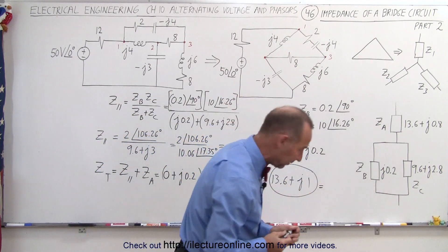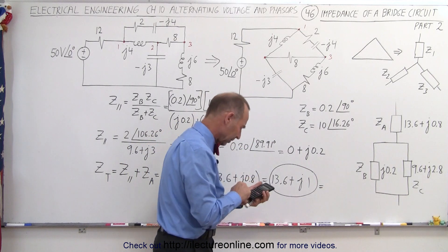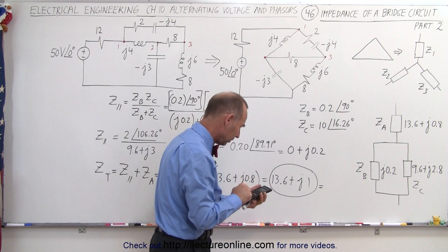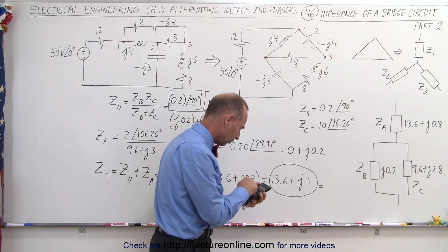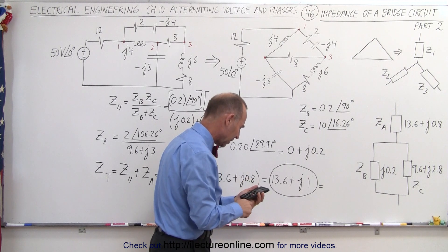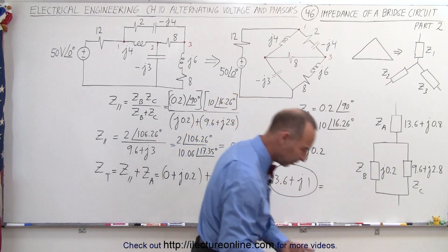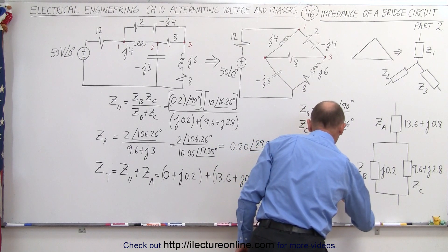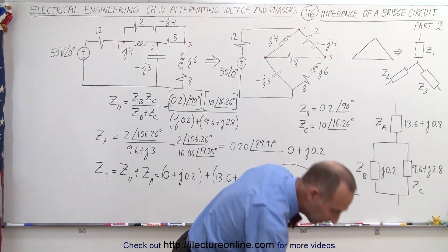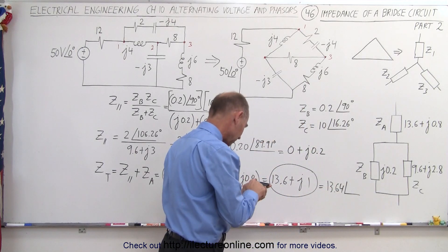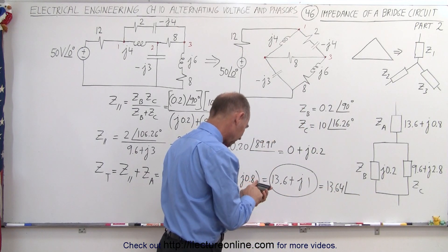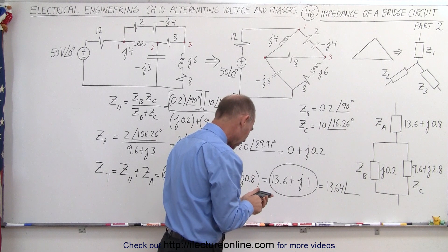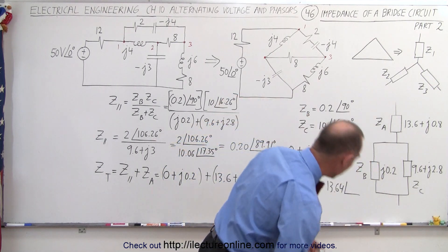Let's go ahead and do that. 13.6 squared plus 1, take the square root of that, that gives me about 13.64, with a phase angle of, so we take 1 divided by 13.6, take the inverse tangent of that, which is about 4.2 degrees.